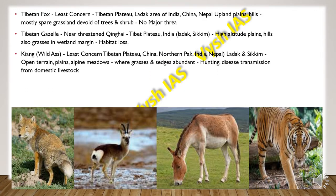Then we have the Kiang, or the wild ass. Its status is least concern. We find them in the Tibetan Plateau, China, northern Pakistan, India and Nepal. In India we find them in Ladakh and Sikkim. They are found on open terrains, plains, alpine meadows where grasses and sedges are abundant, along with short bushes type of vegetation.